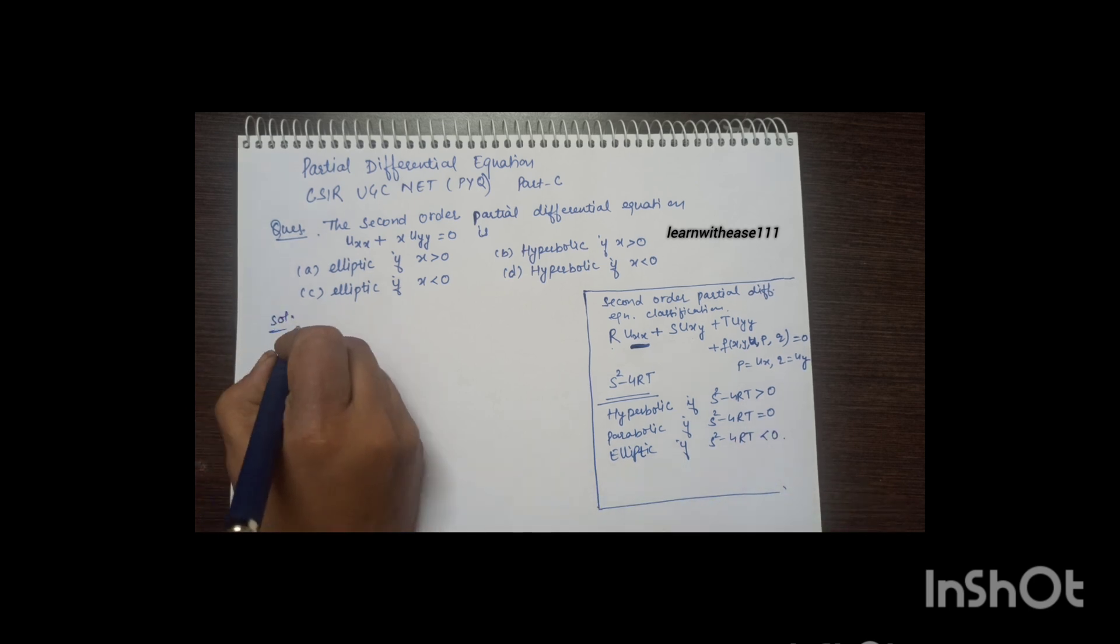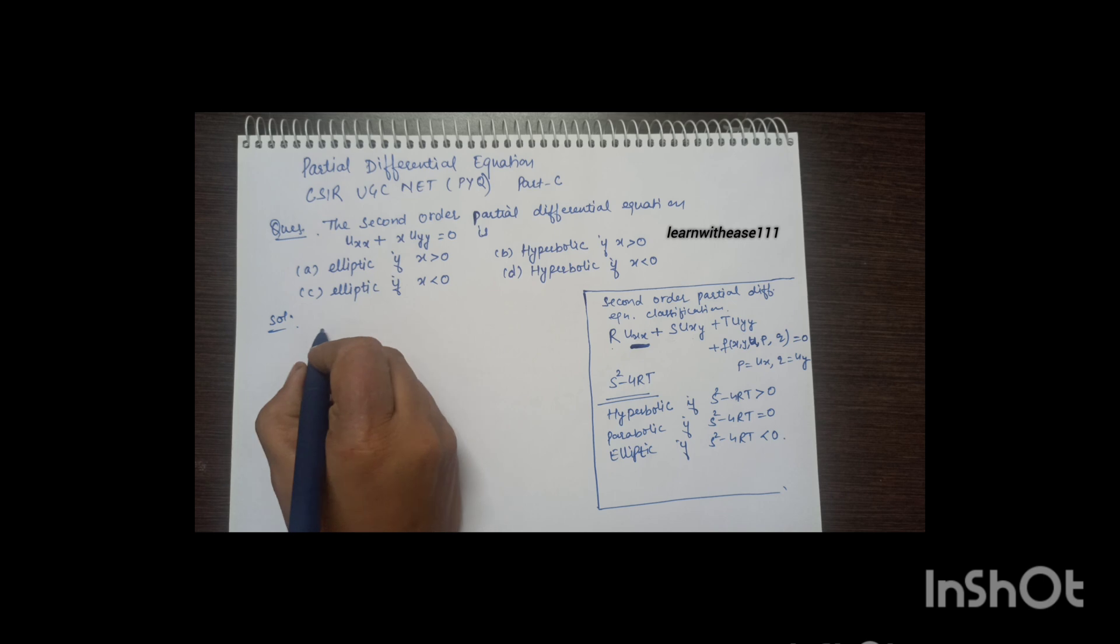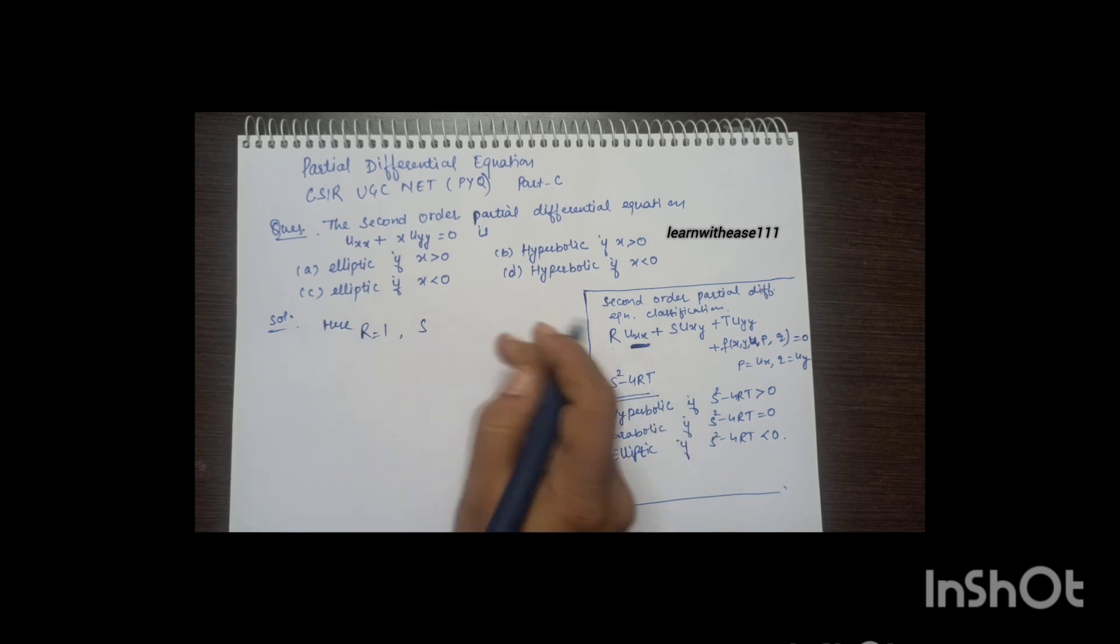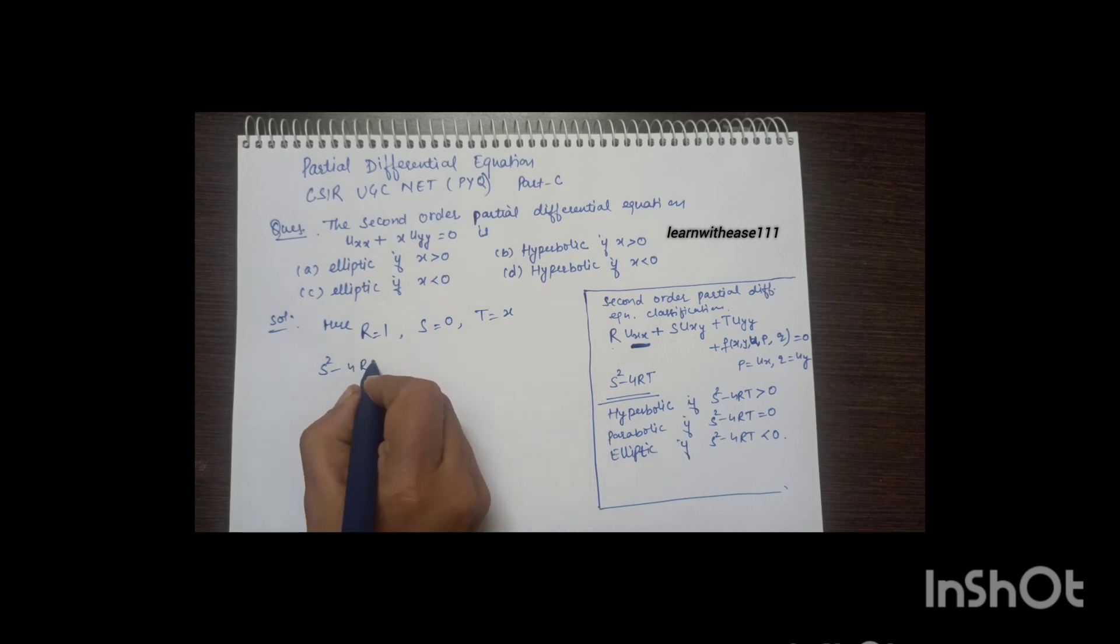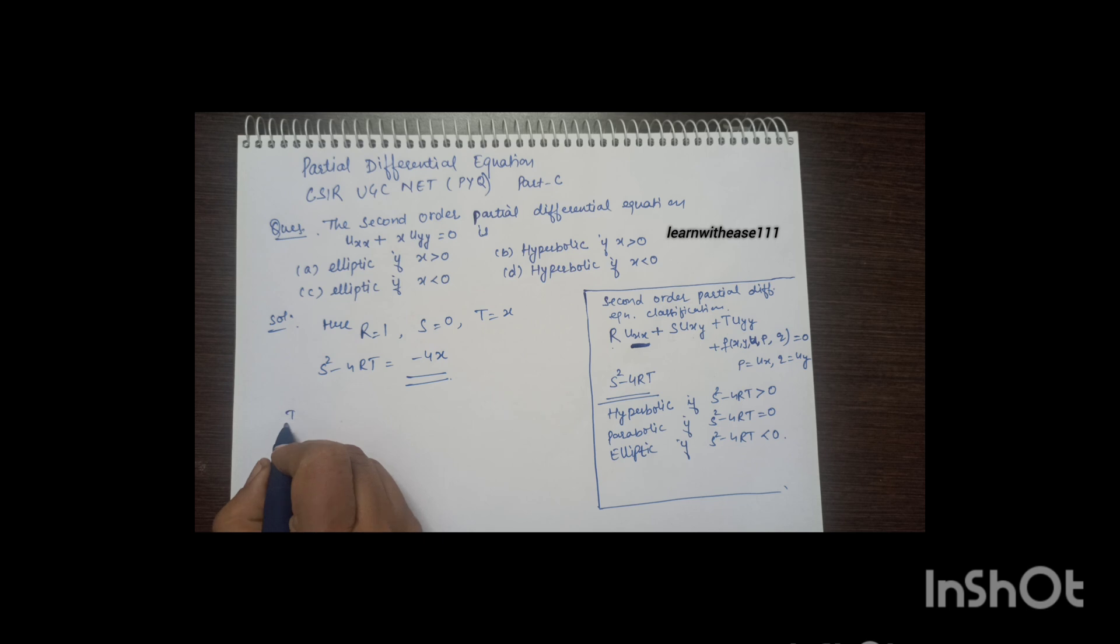Applying these criteria to our equation: the coefficient R of uxx is 1, the uxy term is missing so S is 0, and the coefficient T of uyy is x.